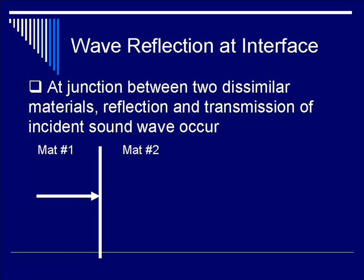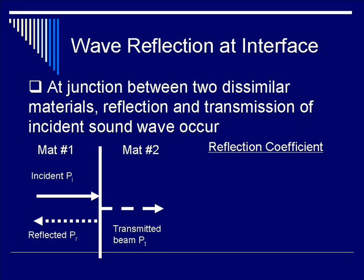The first event would be reflection of this sound wave back from the interface back towards the transducer. You will also have a transmitted wave that will continue to travel through the interface and into material two. The significance of this diagram is that the reflected wave and the transmitted wave, their amplitude should add up to the incident wave, assuming there is no loss in the interfaces.